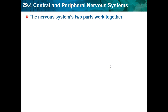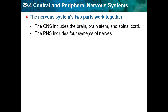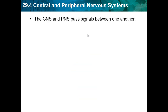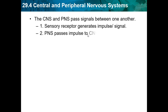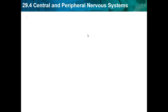The CNS includes the brain, the brainstem, and the spinal cord — all organs located in the center of the body. The PNS, or peripheral nervous system, includes four systems of nerves. The CNS and PNS pass signals between one another: sensory receptors generate impulses, the PNS passes them to the CNS, the CNS interprets them, then passes impulses back to the PNS, which stimulates a response in nerves or organs.